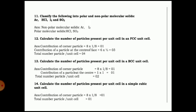Next question: classify argon, hydrogen chloride, I₂, and sulfur dioxide into polar and non-polar molecular solids. Argon and I₂ are non-polar molecular solids. HCl and SO₂ have electronegativity differences and are therefore polar molecular solids. If electronegativity difference is present, it is polar; if not, it is non-polar.